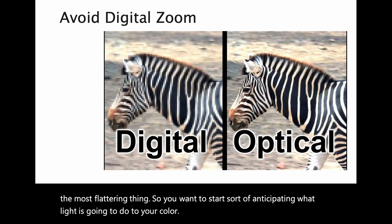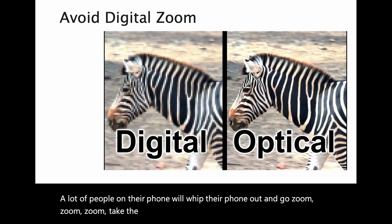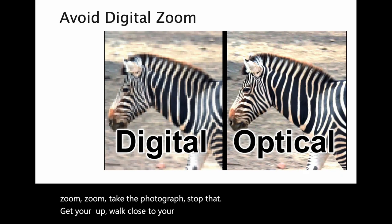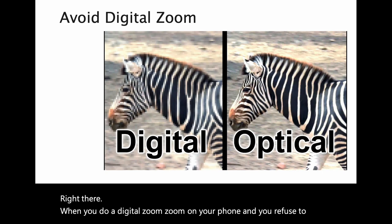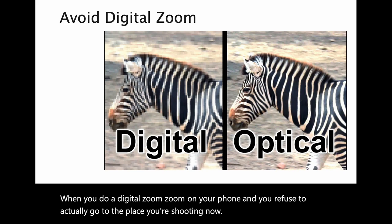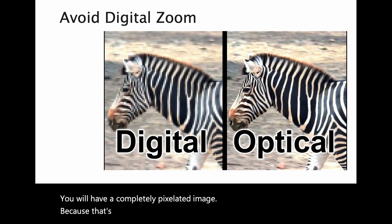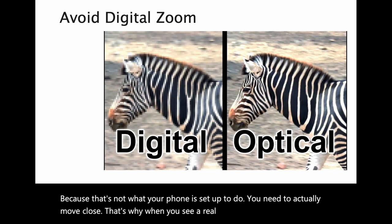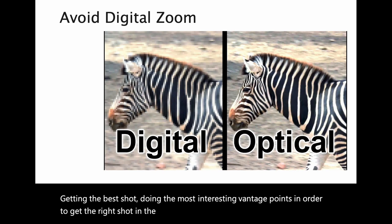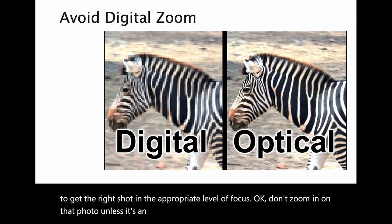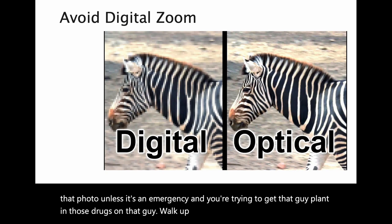A lot of people will whip their phone out and just zoom, zoom, zoom and take the photograph. Stop that. Get up and walk close to your subject. When you do a digital zoom on your phone and refuse to actually go to the place you're shooting, you will have a completely pixelated image because that's not what your phone is set up to do. That's why when you see a real professional photographer, they're on the ground getting the best shot from the most interesting vantage points. Don't zoom in — walk up close.